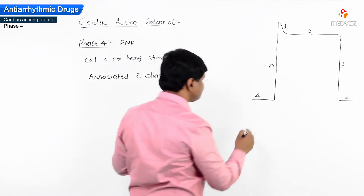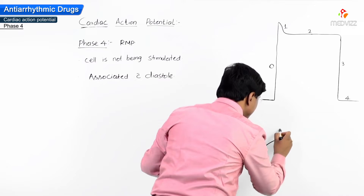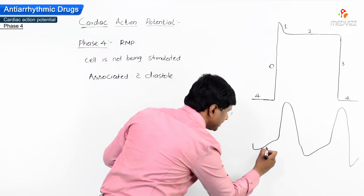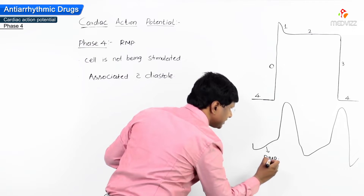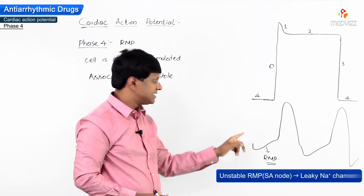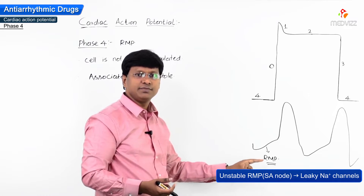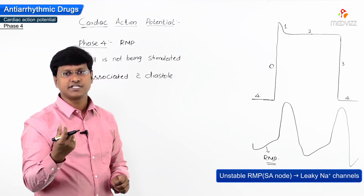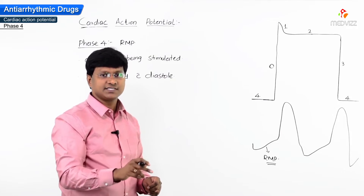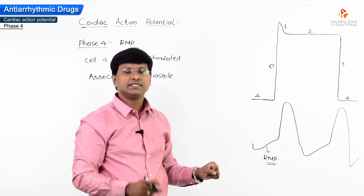For example, in the SA node the action potential is different. The resting membrane potential of the SA node is not a flat line. The SA node contains leaky sodium channels — because of these leaky sodium channels, there is continuously inward movement of sodium even during the resting phase. Once there is sufficient leakage of sodium up to the threshold, the cell can fire on its own — that is automaticity.